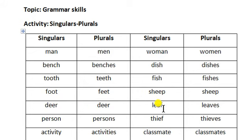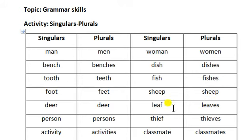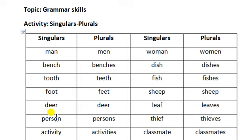For words like 'leaf' and 'thief,' when the word ends in F or EF, we change the F to VES to make the plural. So leaf becomes leaves and thief becomes thieves.